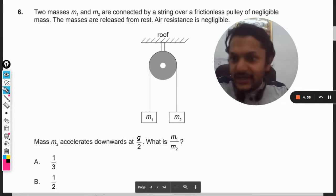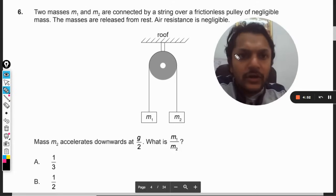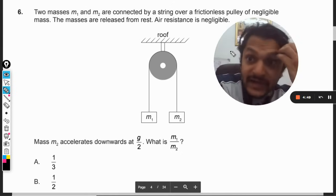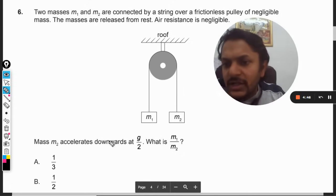Okay, dear students, let's see how to do this question. Two masses m1 and m2 are connected by a string over a frictionless pulley of negligible mass. The masses are released from rest and air resistance is negligible.